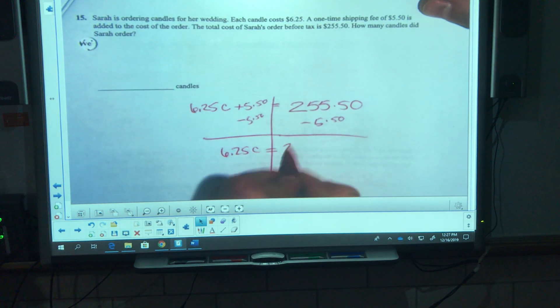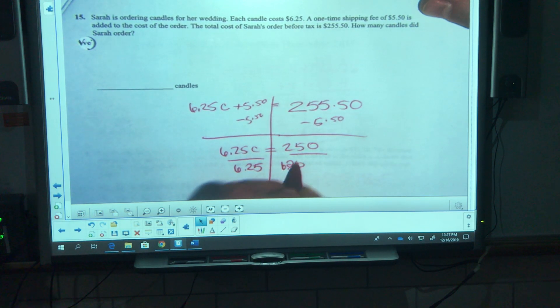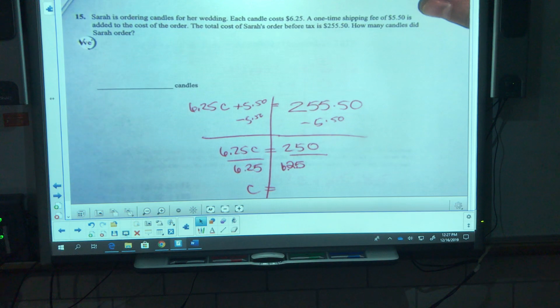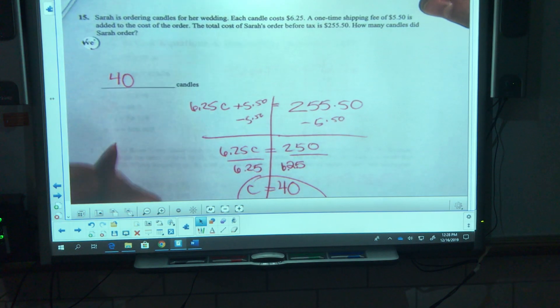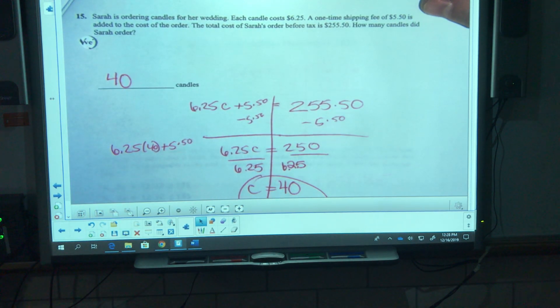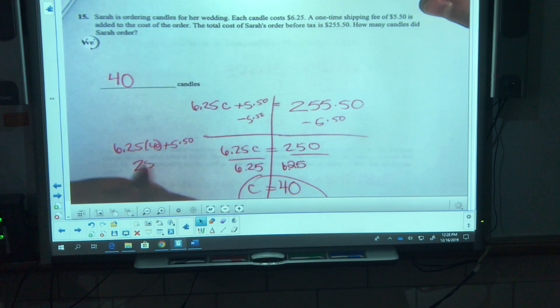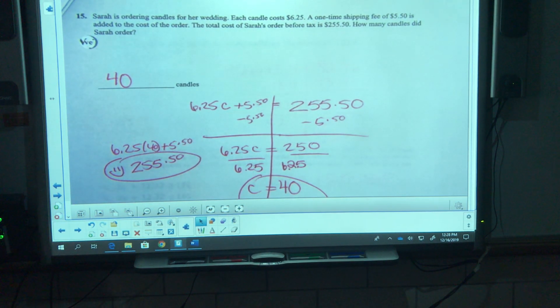Let's solve. Minus 5.50, minus 5.50. 6.25c is equal to 255.50 minus 5.50, that takes me down to 250. Divide by 6.25, and c is going to equal 250 divided by 6.25. She can buy 40 candles. Now one way to check this: 6.25 times 40 plus 5.50. 6.25 times 40 means she's spending 250 on candles plus 5.50 on the shipping, that comes to 255.50, which is exactly what she ends up spending.